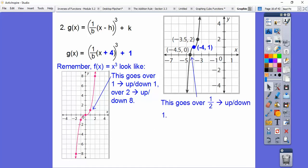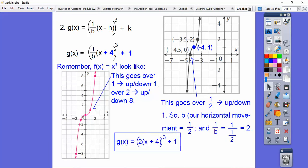Here's our graph. That's what it's supposed to look like. This one goes over 1 up 1. This one goes over a half up 1. So that means our horizontal movement is a half. So 1 over b is 1 over a half, which is that 2. So there's our answer. I just think it's easier to reciprocate. This number is always the reciprocal that goes in front of how much we went over. We went over a half, so the reciprocal is 2.